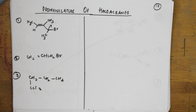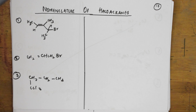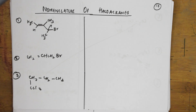Welcome back students to one more session on nomenclature in general organic chemistry. We have already learned the different rules for naming compounds and the order of preference given to functional groups. Carboxylic acids have the highest preference, while ethers have the least. Alkyl, phenyl, and halogens like chloro, bromo, and iodo are always taken as substituents. Please watch the earlier video and then come back to this.